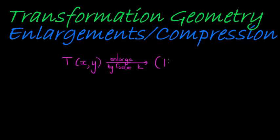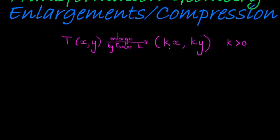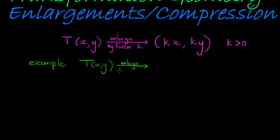The transformation rule looks like this: K multiplies the x-coordinate and K multiplies the y-coordinate. We assume K is greater than zero, so it is literally only multiplying x and y, making them larger numbers. A basic example would be T(x,y) — enlarge by factor 2 — gives us (2x, 2y).